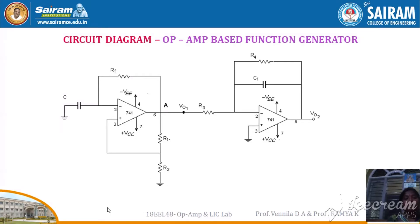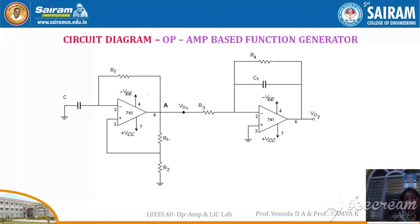The first part of the circuit is the astable multivibrator, followed by the integrator circuit. The output of the astable multivibrator will be at VO1 and the output of the integrator will be at VO2. Here we are generating the square waveform and the triangular waveform without giving an external input. The op-amp application here is the function generator, and how the op-amp generates these waveforms will be seen using the design and the practical circuit.